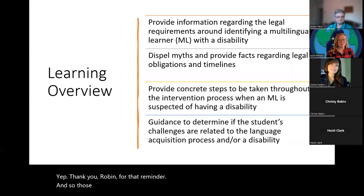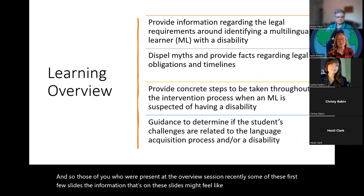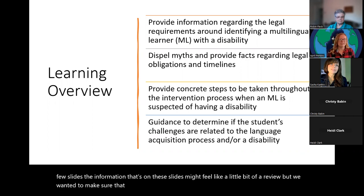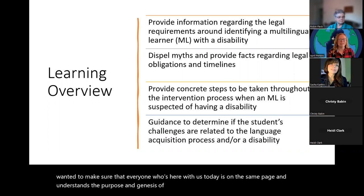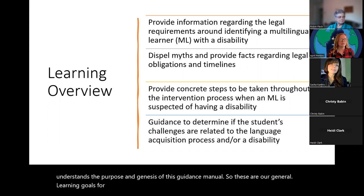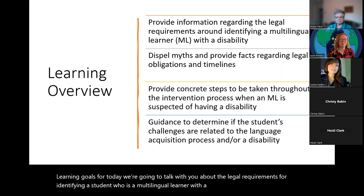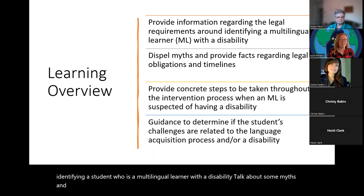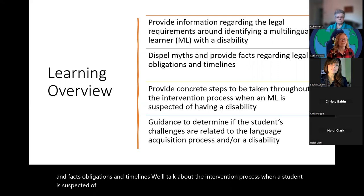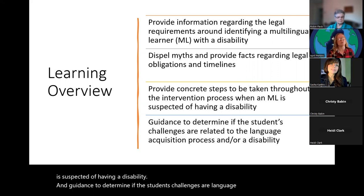If you were present at the overview session recently, some of these first few slides might feel like a review, but we want to make sure everyone is on the same page and understands the purpose and genesis of this guidance manual. Our learning goals for today include: the legal requirements for identifying a student who's a multilingual learner with a disability, myths and facts, obligations and timelines, the intervention process, and guidance to determine if a student's challenges are language acquisition, disability, or both.